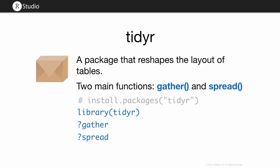TidyR is the means to get there. It's a package that picks up where reshape2 left off. TidyR has two main functions — gather and spread — that do similar things as melt and cast if you're coming from the reshape world. There are several other functions in there too, but these are the main ones.